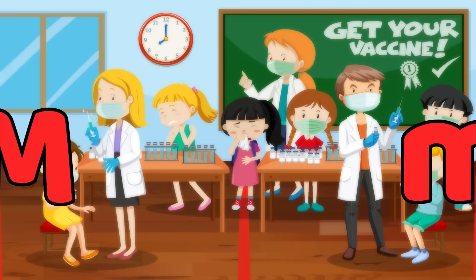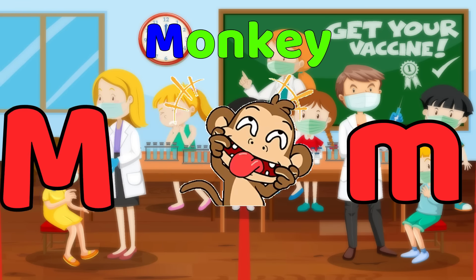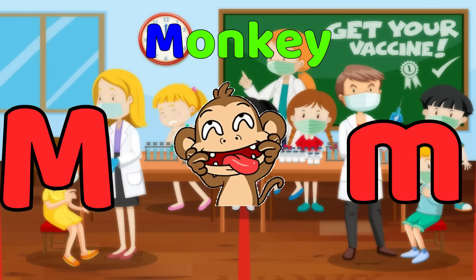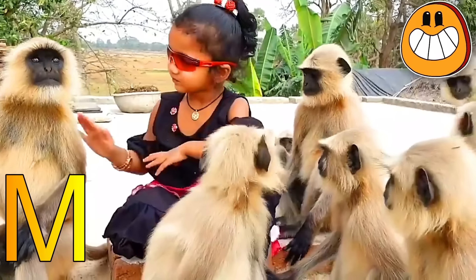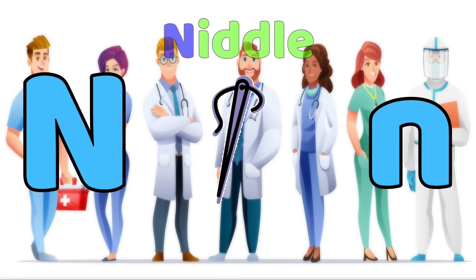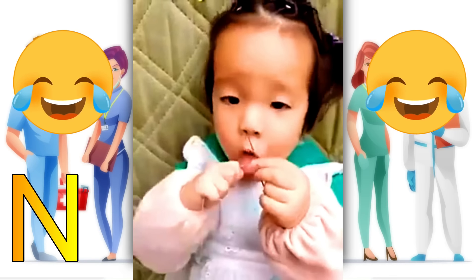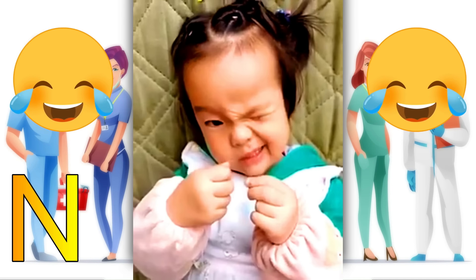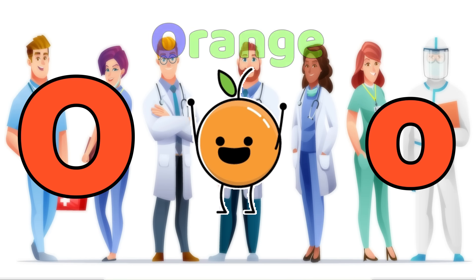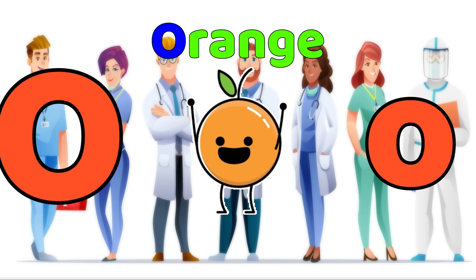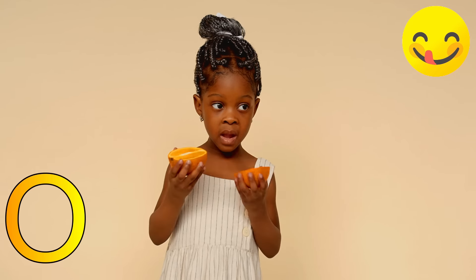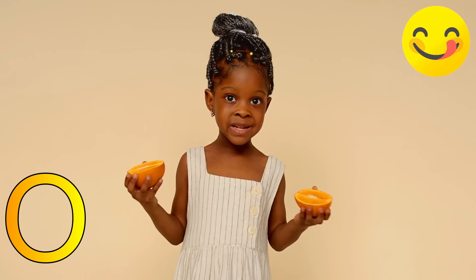M is for Monkey. M-M-Monkey. M-M-Monkey. M-Monkey. N is for Needle. N-N-Needle. N-N-Needle. N-Needle. O is for Orange. O-O-Orange. O-O-Orange. O-Orange.